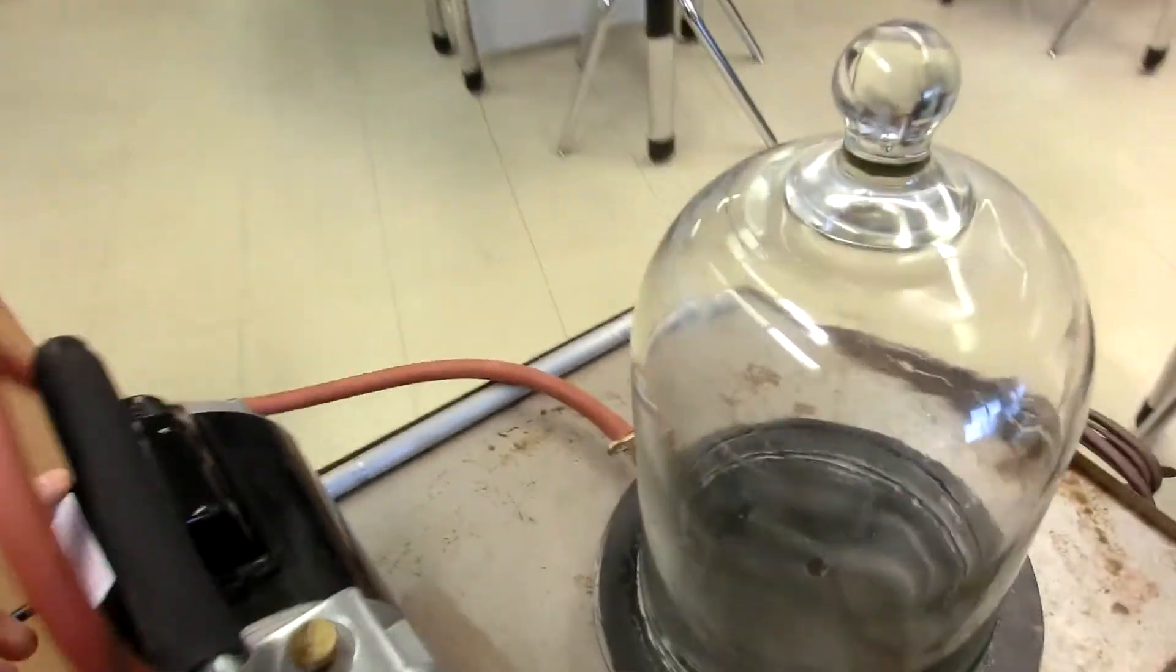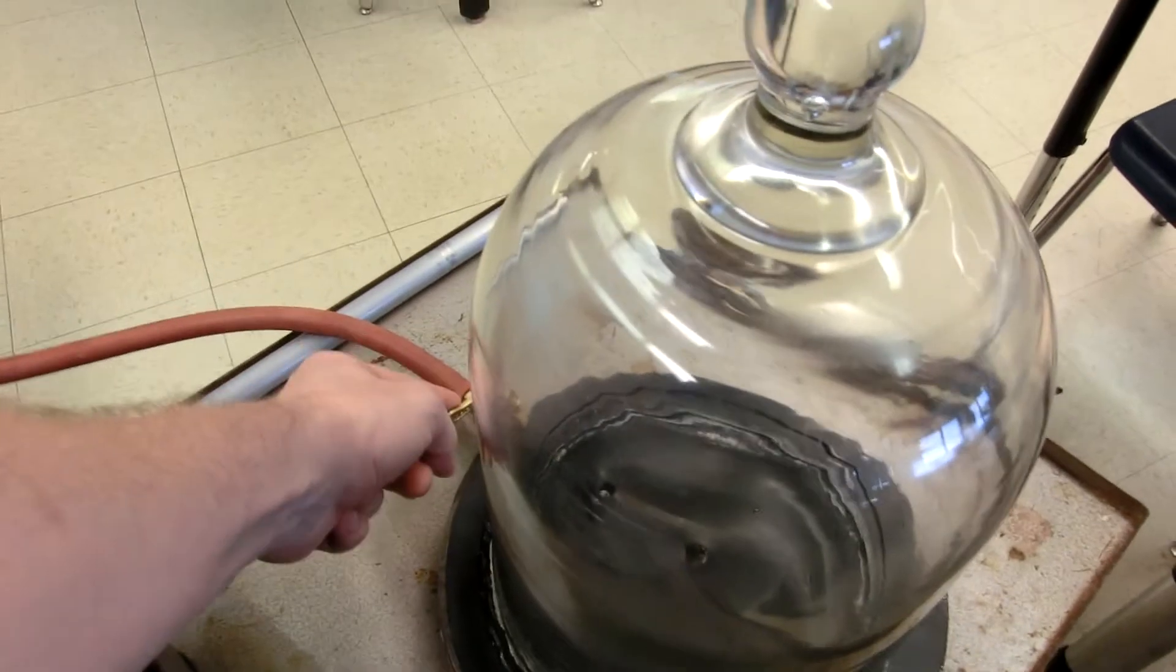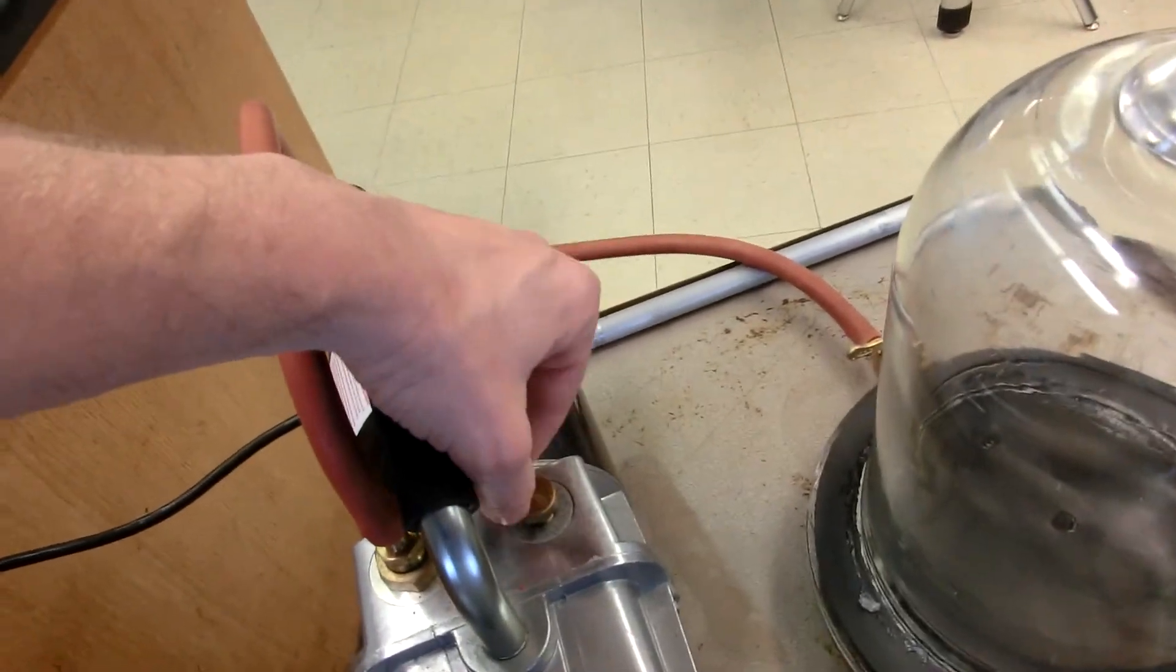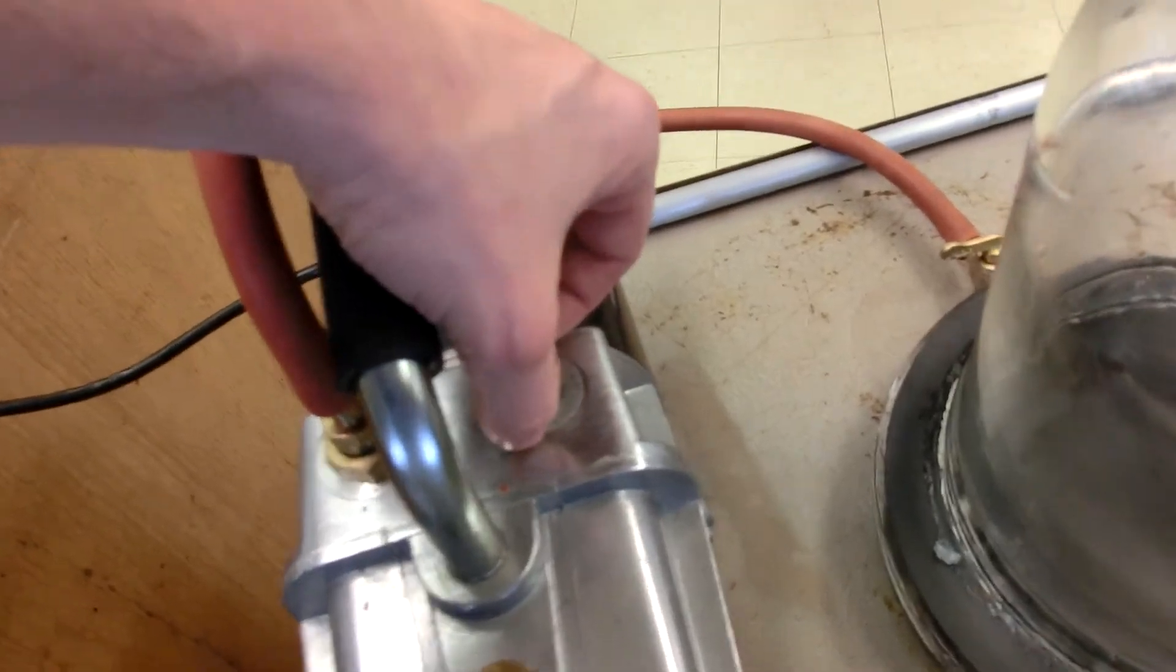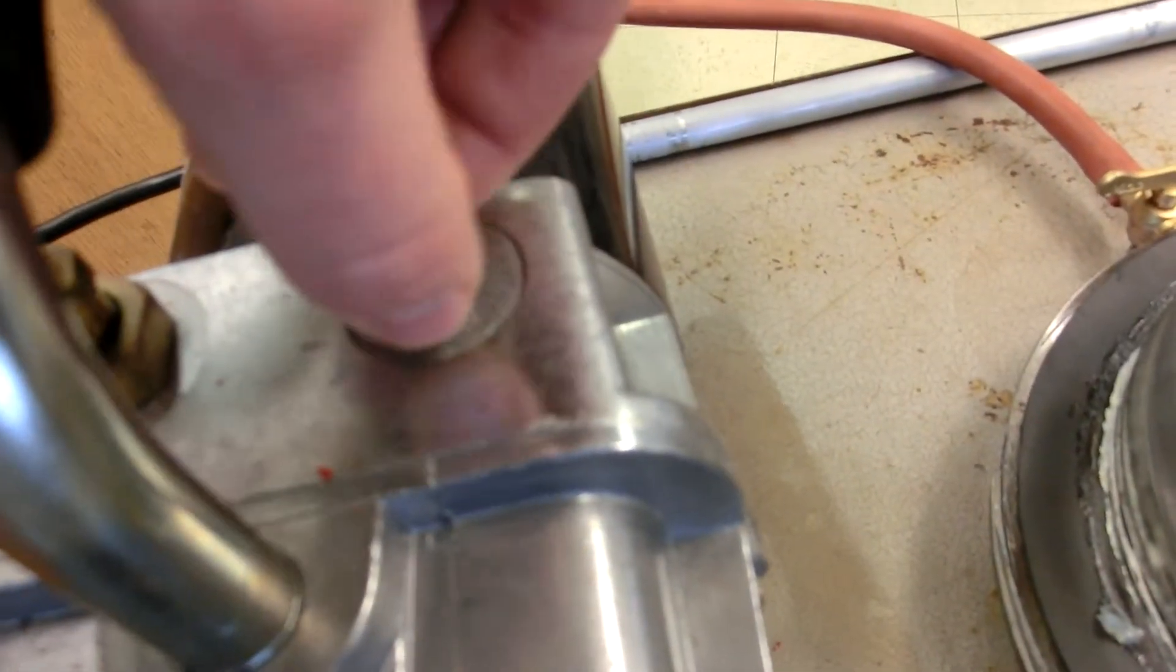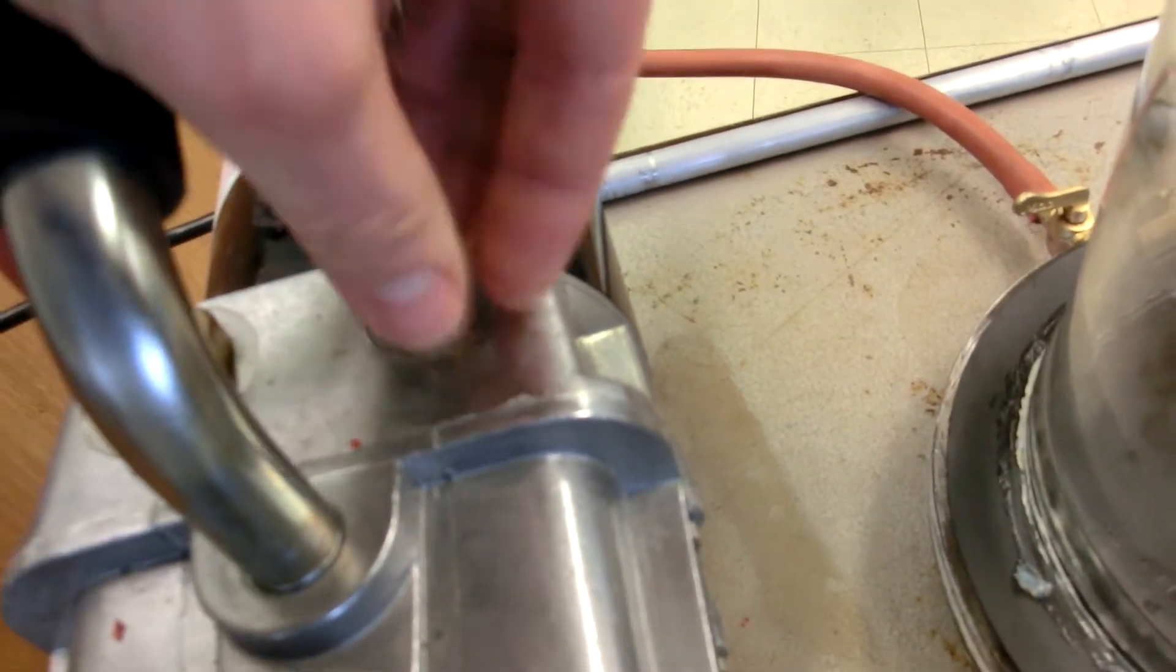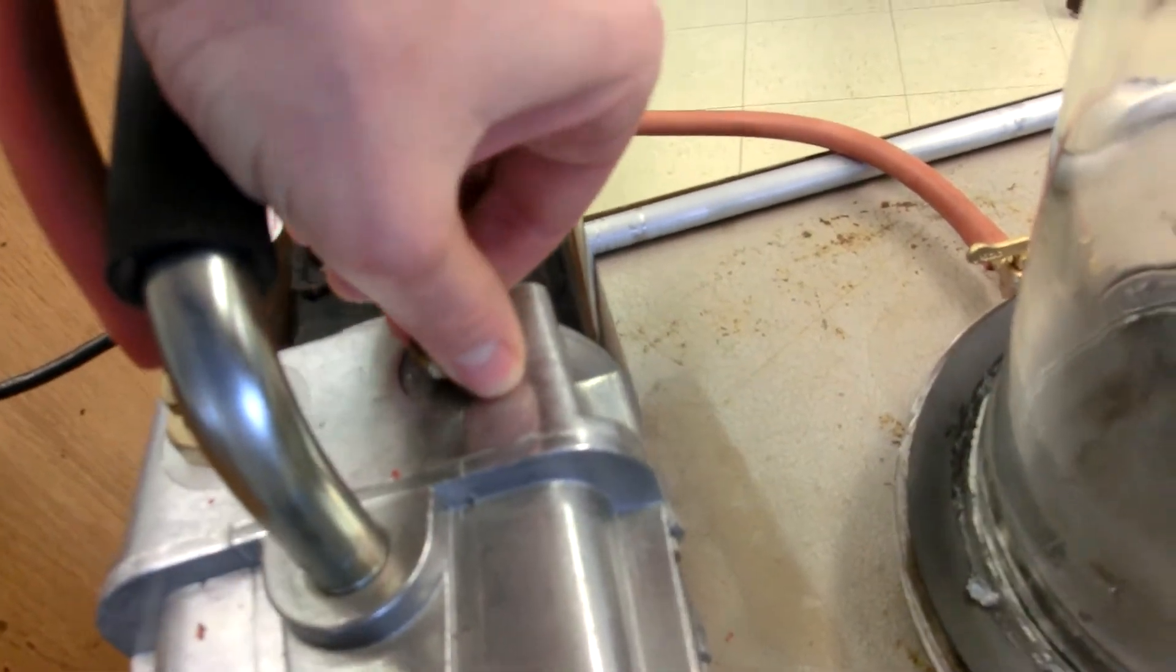So once again, after you shut it off, shut this valve and at this point we could actually release the ballast. Listen for it, so now the pump itself is no longer under a vacuum.